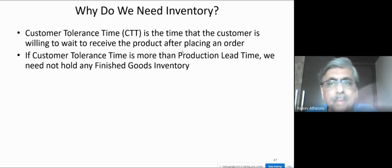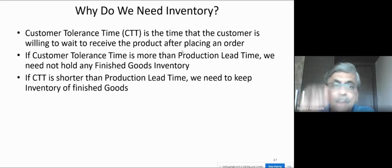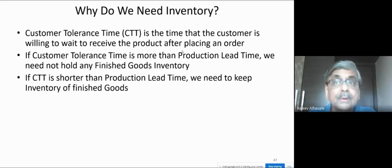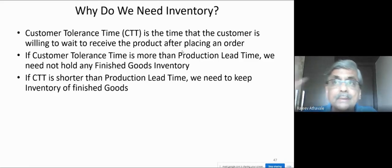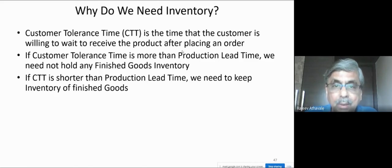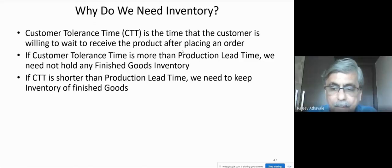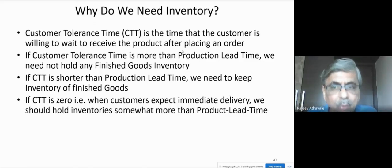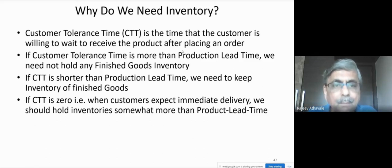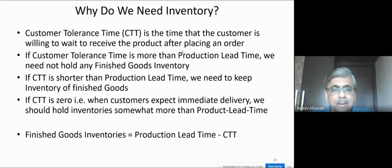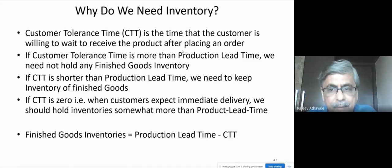If customer tolerance time is shorter than production lead time, we need to keep finished goods inventory. If the production lead time is 10 days and the customer wants it immediately, you have to keep inventory. If CTT is zero — meaning the customer wants immediate delivery — you have to keep inventory somewhat more than the production lead time. The formula is: inventory needed equals production lead time minus customer tolerance time.